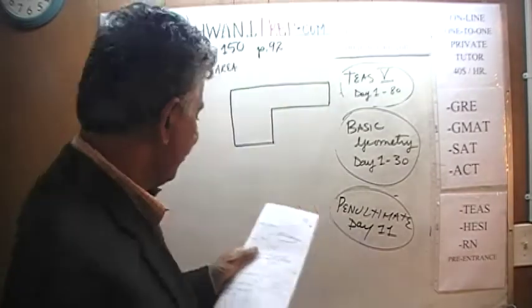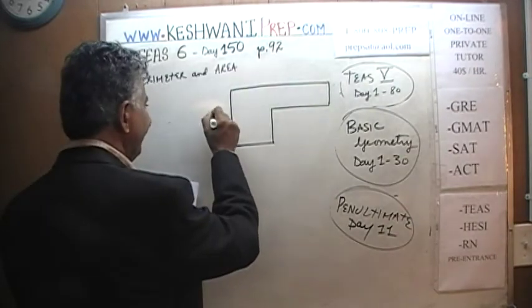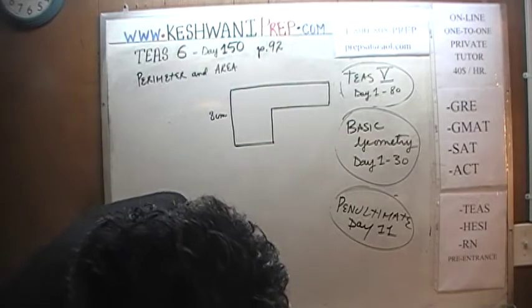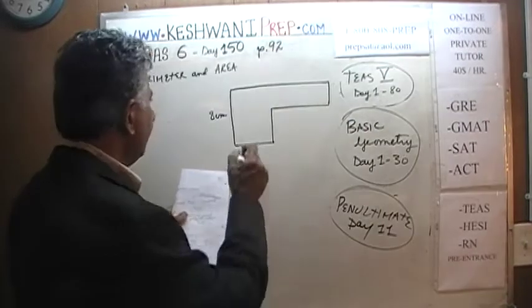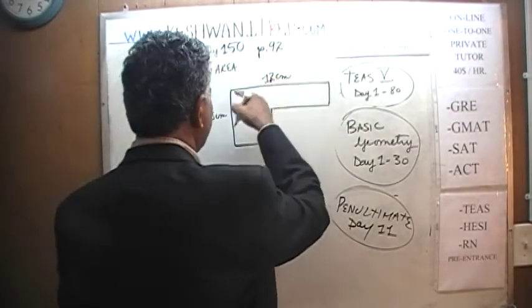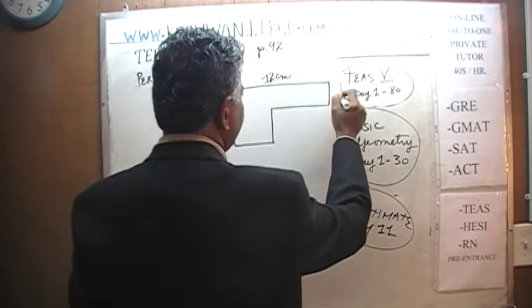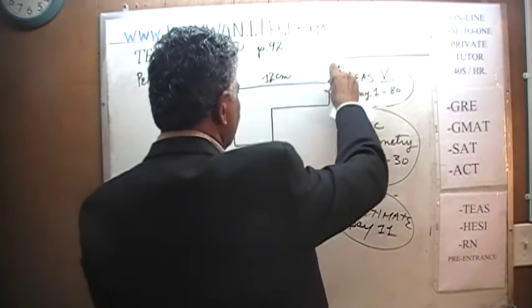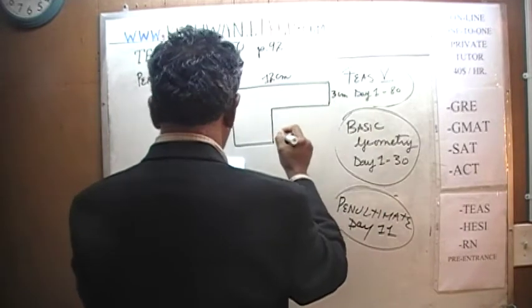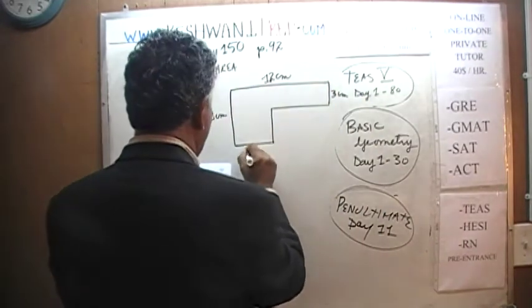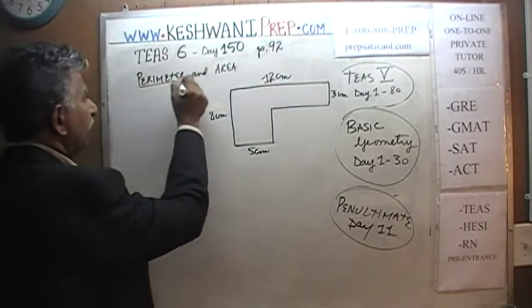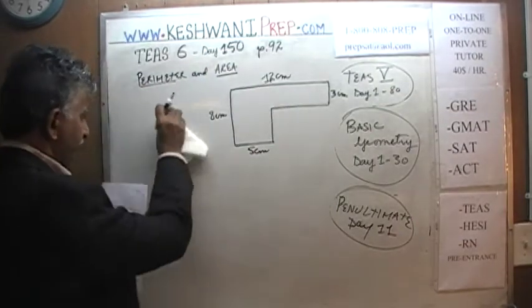Let's do one extra one on the blackboard here. We are told that this is 8 centimeters — and you will see that's not what you have in the book; in the book it says 4 centimeters. This is 12 centimeters from here to here. This length here is 3 centimeters, and this is 5 centimeters. We are being asked to find the perimeter and the area of this figure.